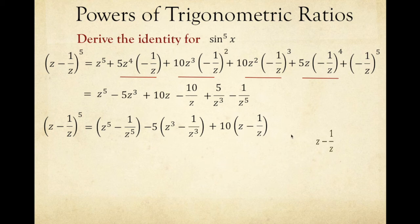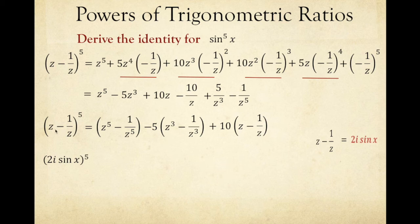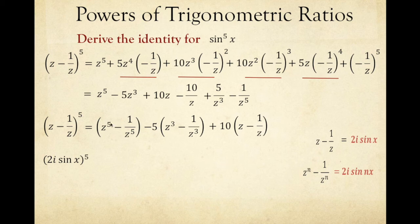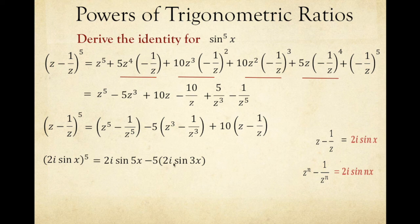Recall the identity z minus 1 over z equals 2i sin x. So we replace z minus 1 over z to the power of 5 on the left with 2i sin x to the power of 5. For z to the power of 5 minus 1 over z to the power of 5, with n equal to 5, that equals 2i sin 5x. For z cubed minus 1 over z cubed, n equals 3, so that gives negative 5 times 2i sin 3x. The middle group gives 10 times 2i sin x.